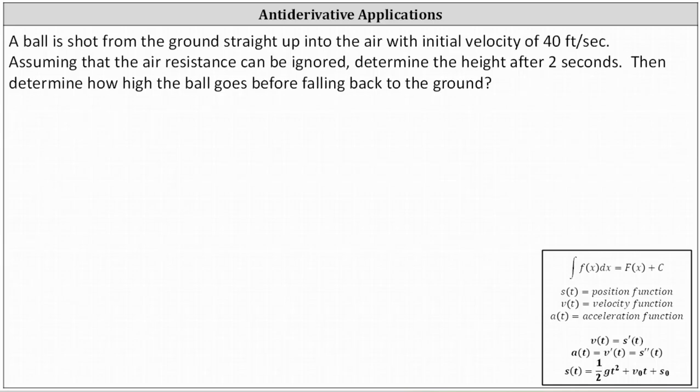A ball was shot from the ground straight up into the air with an initial velocity of 40 feet per second. Assuming that air resistance can be ignored, determine the height after two seconds. Then determine how high the ball goes before falling back to the ground.